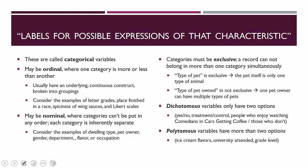Now we get into what kind of data those variables hold. When we talk about labels for possible expressions of a characteristic, we're talking about categorical variables — variables that capture into which category a record falls. Categorical variables might be ordinal, where one category is more or less than the others, so there's an order to them, and that order is reasonable.